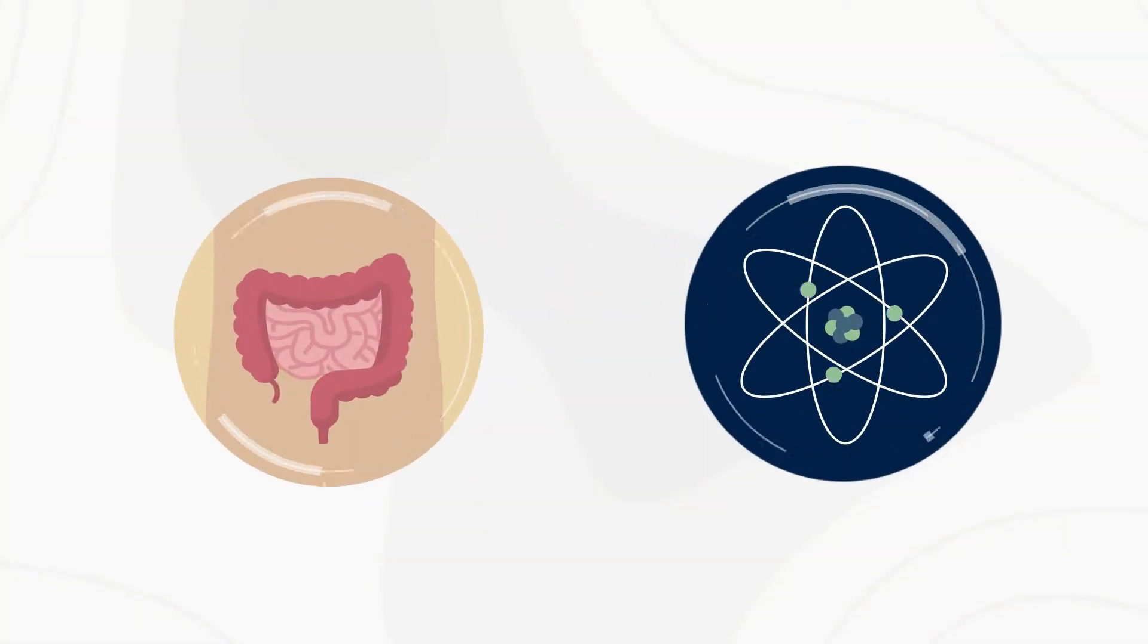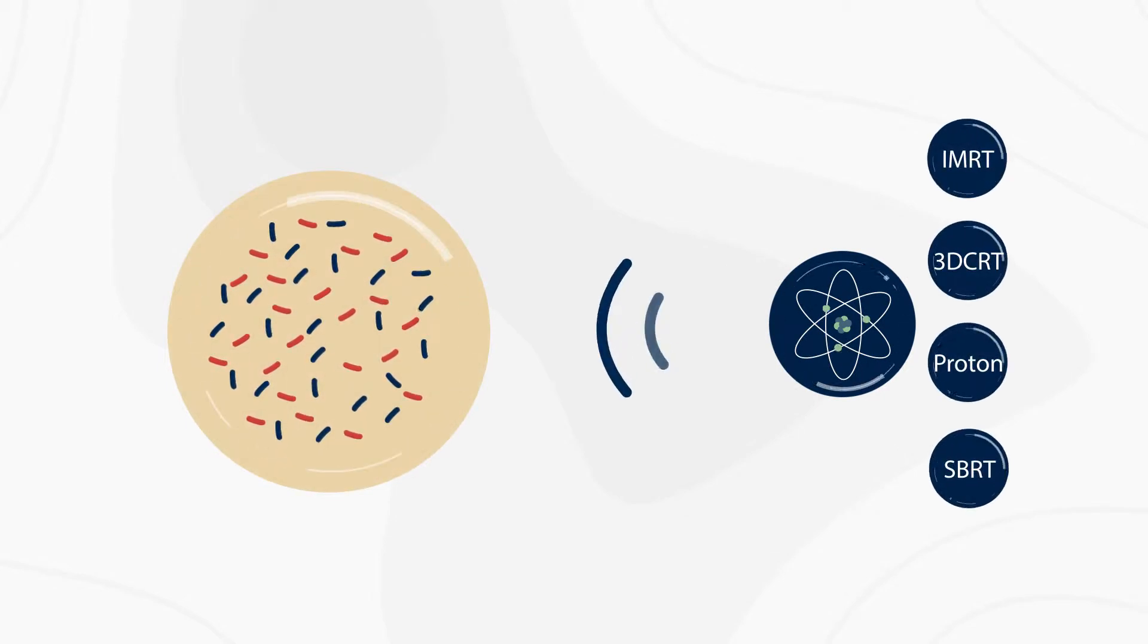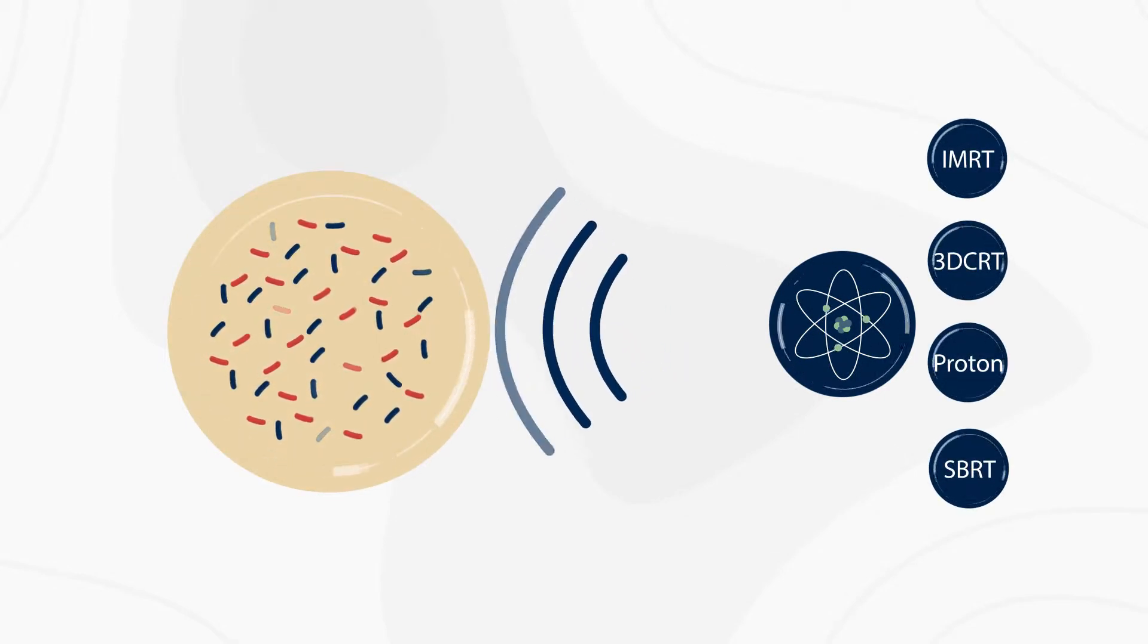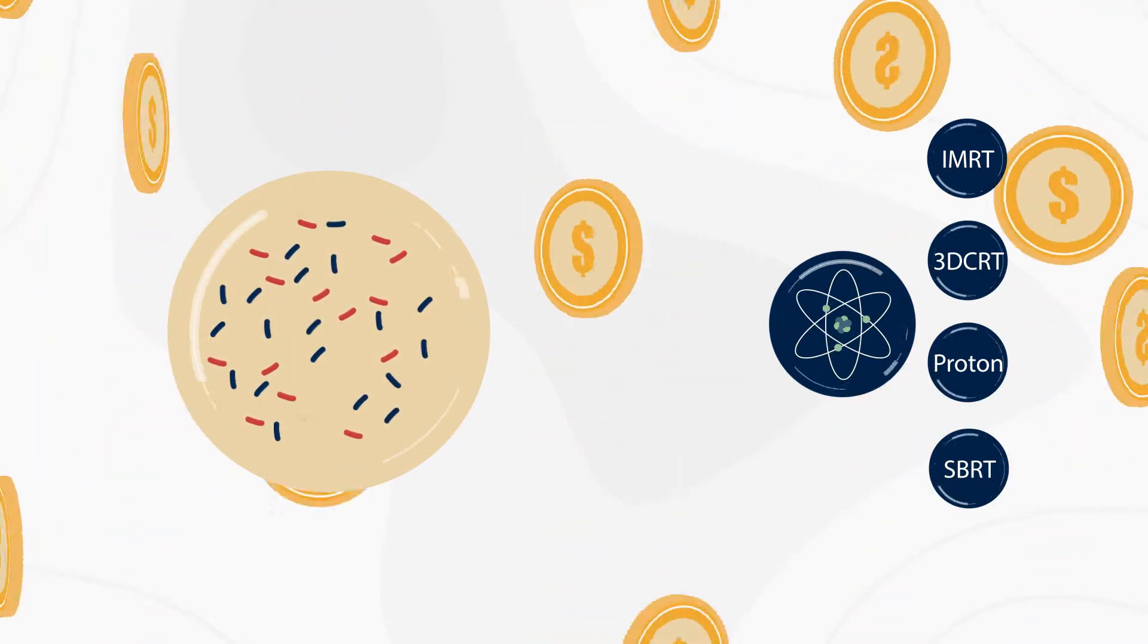IMRT is one of several forms of radiation treatment designed to use high-energy beams to kill cancerous cells. Each of these forms of radiation have their pluses and minuses and their costs can vary significantly.